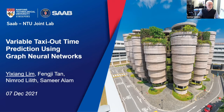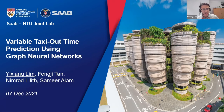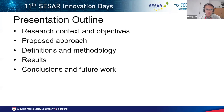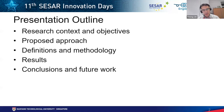Thank you, George, for the introduction. Good morning, good afternoon, good evening everyone. I am here to present work from the SAAB NTU Joint Lab on variable taxi-out time prediction using graph neural networks. My name is Yixiang, and I acknowledge my co-authors Feng Ji, Nimrod, and Samir, who contributed significantly to this project. I will cover research context and objectives, our motivation, proposed approach, some definitions, methodology, results, and conclusions and future work.